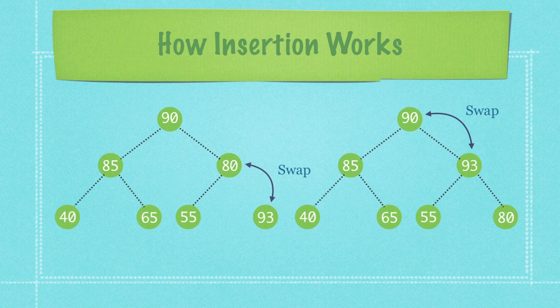So how does insertion work? Well if we're going to insert an item like 93, since 93 is greater than 80 it is going to jump up into that position. Then because 93 is greater than 90 it is then going to jump up into the root spot and 90 is going to jump down. And that's how insertion works.